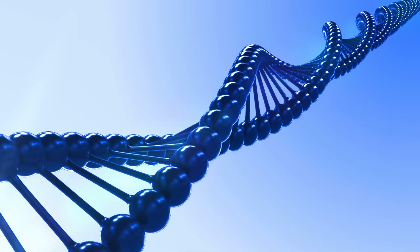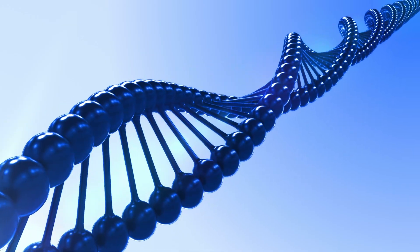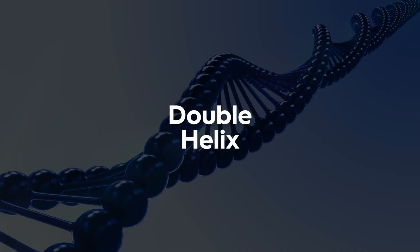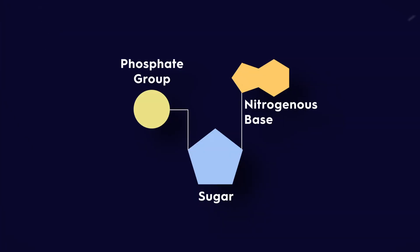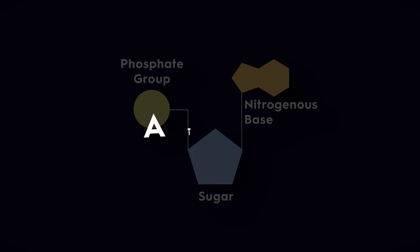First, the basics. DNA is a twisted ladder called a double helix. Its rungs are paired nucleotides reading like a four-letter alphabet. Each nucleotide has a sugar phosphate backbone and one of four nitrogenous bases, A, T, C, or G, sticking toward the center.